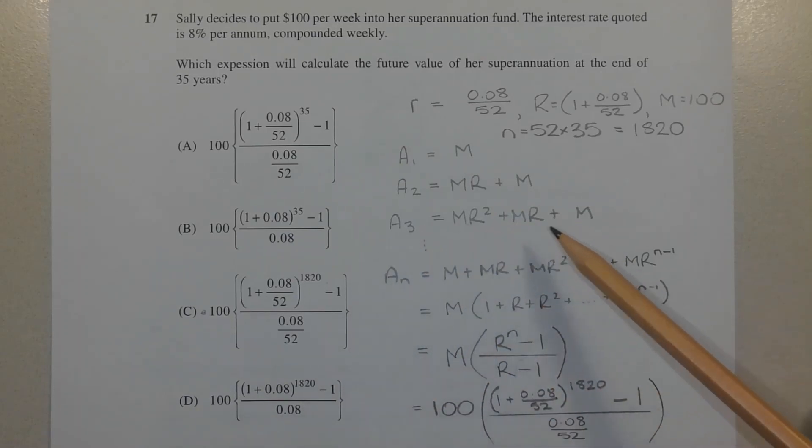The value at the end of the third week, A3, we find by increasing A2 by 0.08 over 52 by multiplying MR plus M by capital R. So MR times R is MR squared, M times R is MR, and Sally deposits another M dollars. So A3 equals MR squared plus MR plus M.